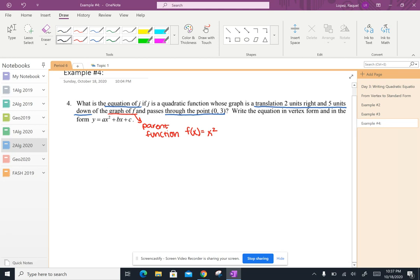What makes this different than the other ones is that there is no graph to go off of, but I'm going to go ahead and give myself a visual. So I know that the graph of f, if it's the same as the one from example three, is the parent function of a quadratic. So it's got the equation f of x equals x squared with a vertex at zero comma zero.